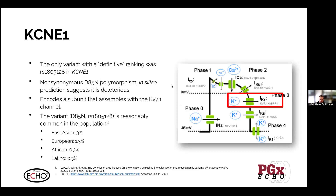The KCNE1 gene encodes a subunit in the 7.1 channel, and this variant is actually quite common in the population. In East Asians, up to 3% will be carriers; in Europeans, a little over 1%; and it is slightly less common in African and Latino populations.